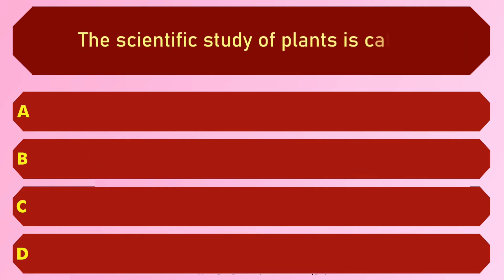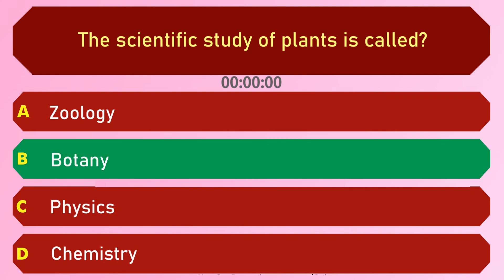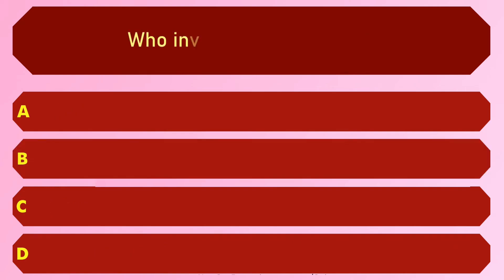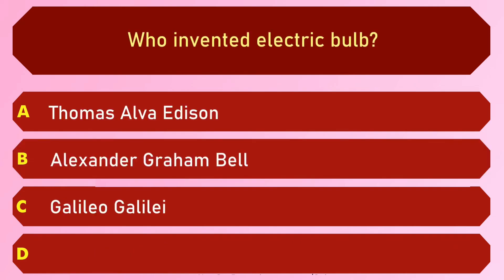The scientific study of plants is called — options are: A) Zoology, B) Botany, C) Physics, and D) Chemistry. The answer is option B, Botany. Who invented the electric bulb? Options are: A) Thomas Alva Edison, B) Alexander Graham Bell, C) Galileo Galilei, and D) Albert Einstein.